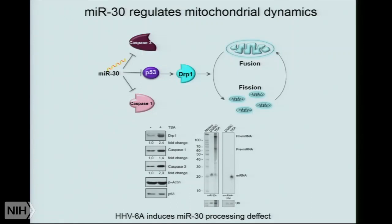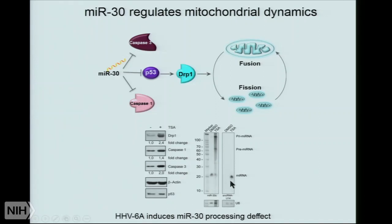We know from the literature that there is a human microRNA called microRNA-30, which is responsible for DRP1 expression. When there is more microRNA-30, DRP1 goes down and we have longer mitochondria. When there is a high amount, DRP1 goes up and we have smaller fragmented mitochondria. What we saw is that after viral reactivation, there is a defect in microRNA-30 processing — the processed microRNA-30 goes down. At the same time, we found a very interesting observation: these cells with reactivating virus are producing small non-coding RNAs from the viral genome.